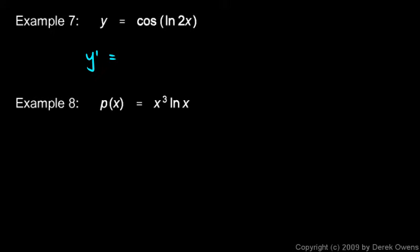y prime is found by differentiating the cosine function. The derivative of cosine is negative sine, so it's negative sine of the natural log of 2x times the derivative of ln of 2x by the chain rule.